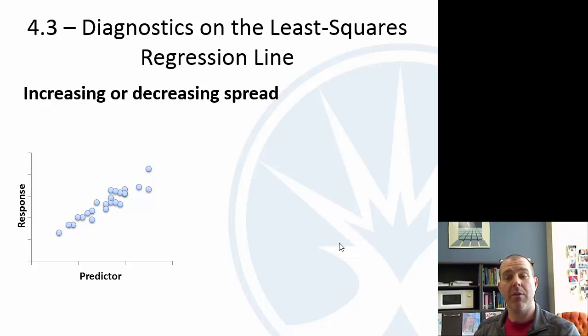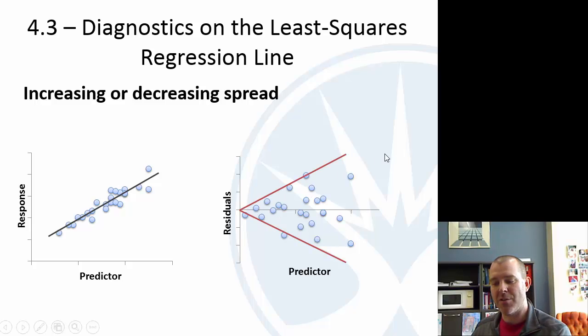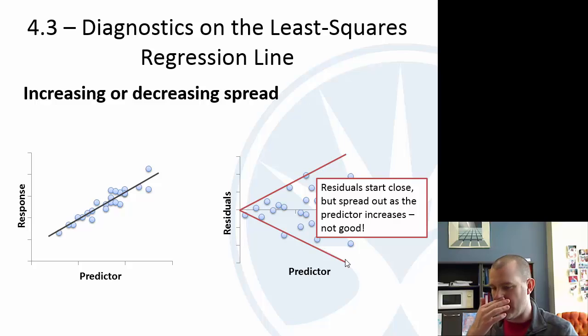All right, now, increasing or decreasing spread. You look at this one, like, it looks pretty good, right? They look pretty linear. You draw a line, like, looks great. But then when you do the residual plot, they start close, but then they spread out as you go further, and that's not good either. That means that linear relationship is not consistent. So you can't have an increasing or decreasing spread either. So they start close, but then they spread out as the predictor increases.